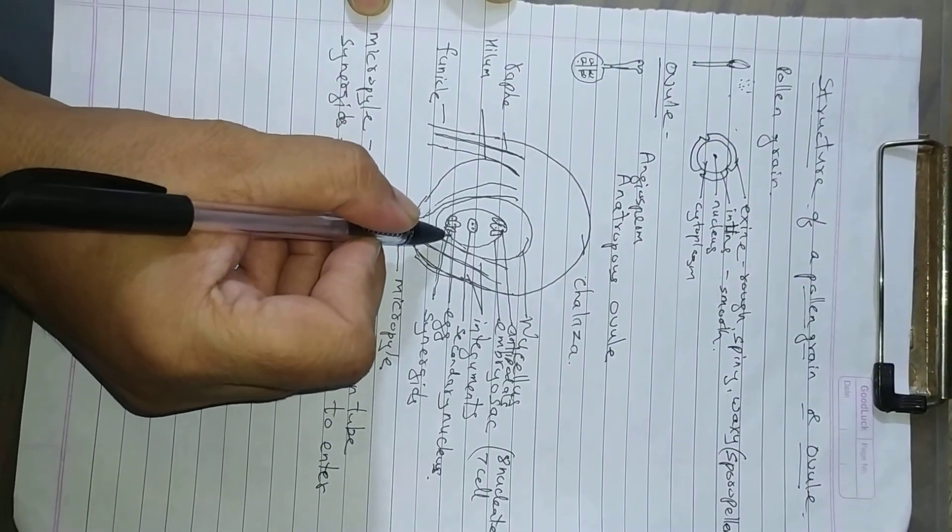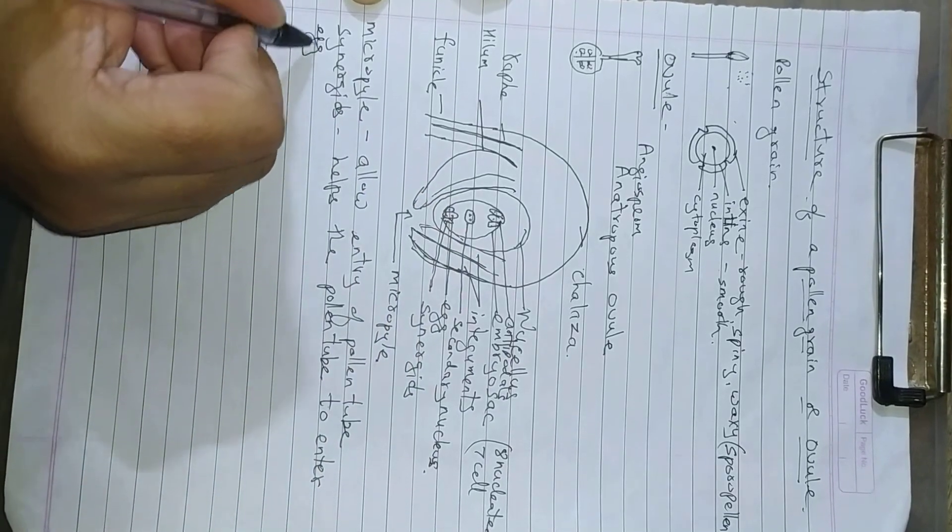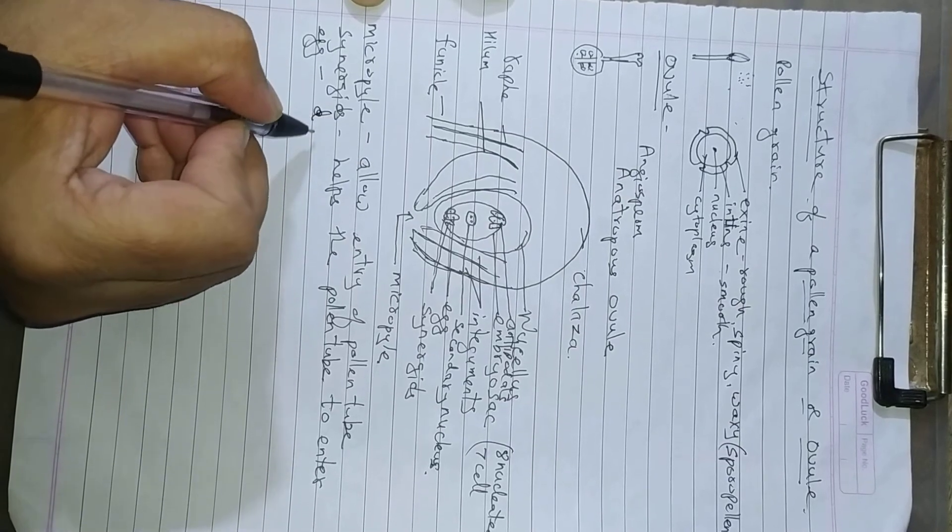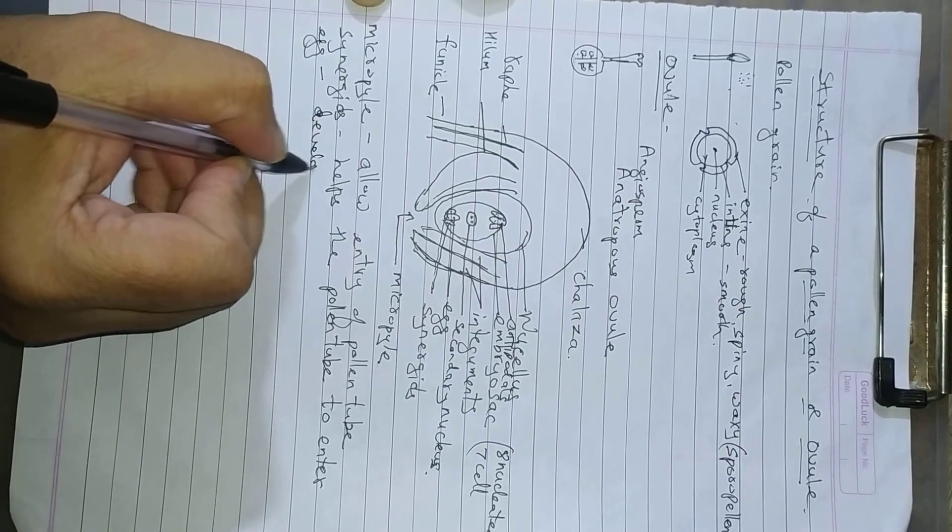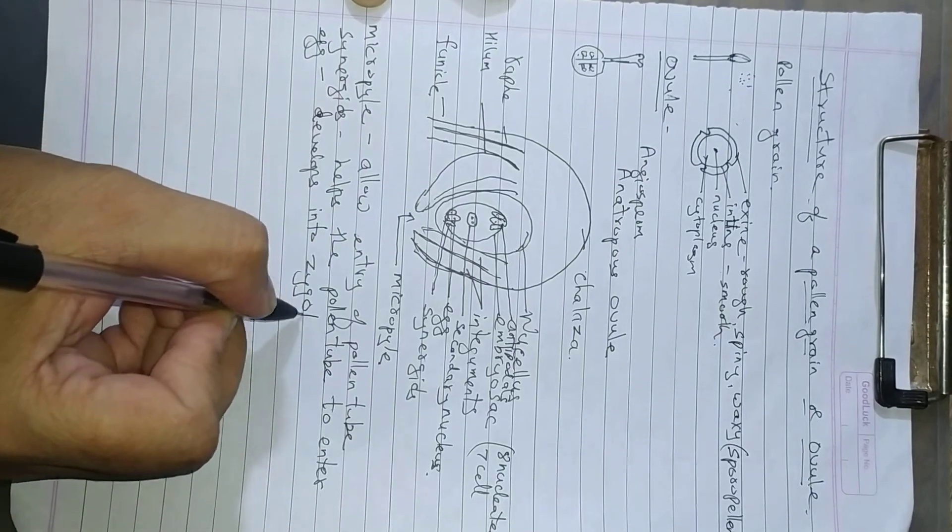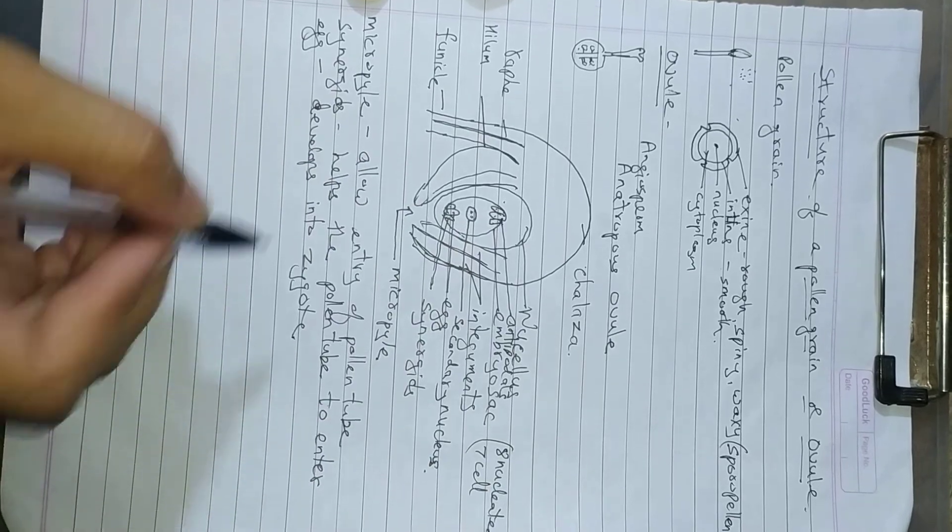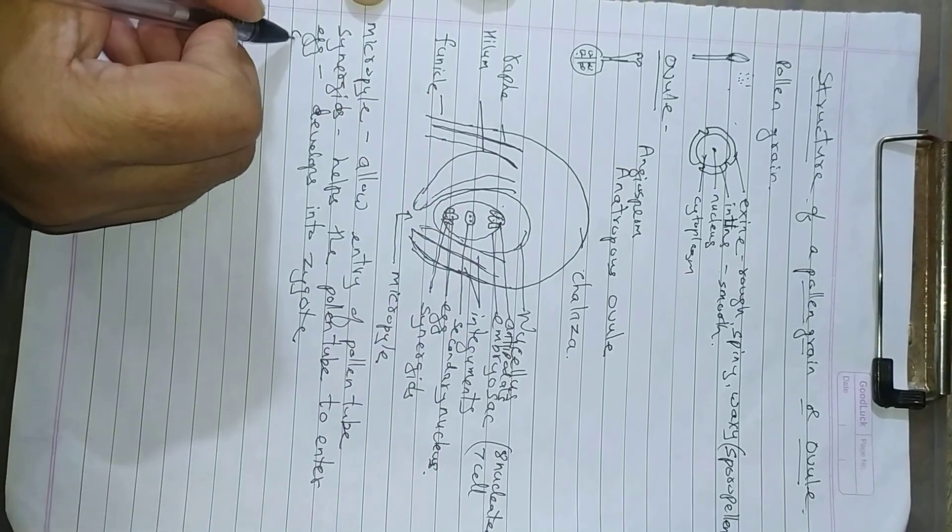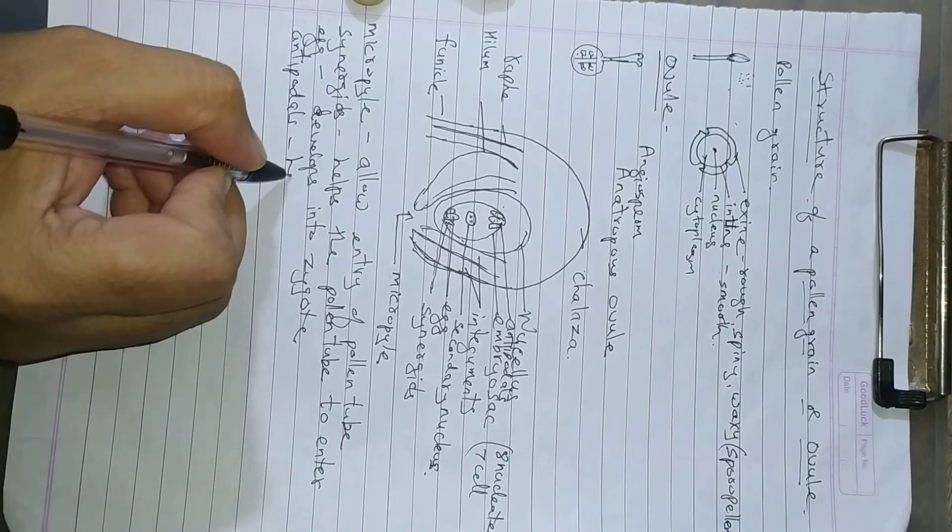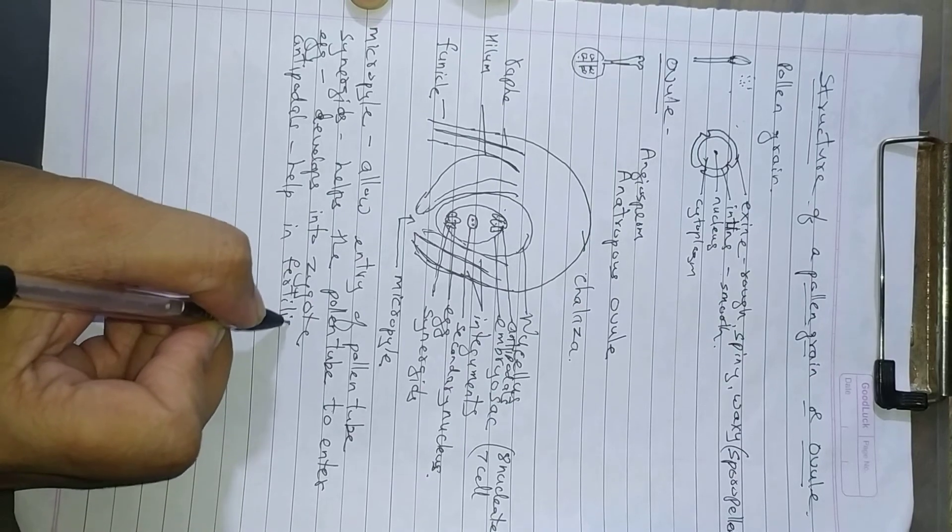They help the egg to unite with the male gamete. The egg cell develops into zygote. The antipodals help in the process of fertilization.